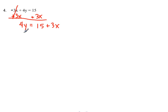The y is not by itself. It has a coefficient of 4, so divide by 4. The 4's cancel to give you y equals. These do not divide evenly, so just leave them in fraction form. So 15 divided by 4 is 15 fourths, plus 3 divided by 4 is 3 fourths x.